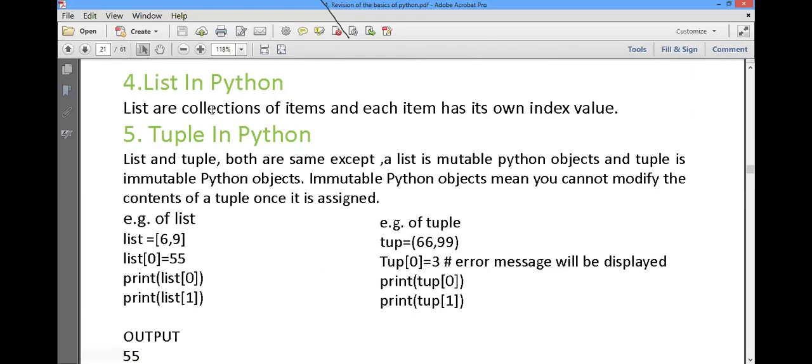So other data types, list, tuples. So list is collection of items. Mutable or immutable? Mutable, right? So but what about tuples? Immutable. Tuple is immutable. What do you mean by mutable? We can mute and unmute. We are muting and unmuting, isn't it? So that is a list. But if we are not able to do anything, immutable, then that is a tuple. Understood?